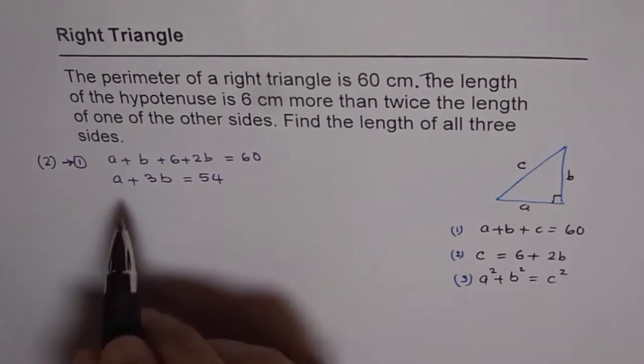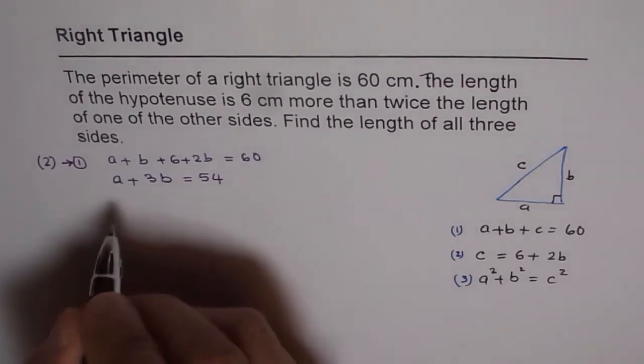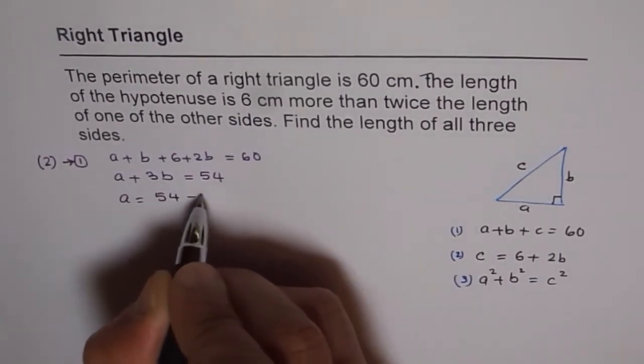That gives us a plus 3b equals 54, so we get a equals 54 minus 3b.